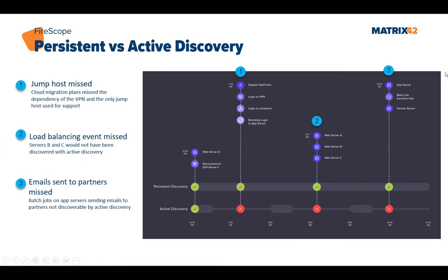Another example is web server load balancing. Web servers A and B run 24x7, but under high load, web server C is also booted up. With only active discovery, web server C will never appear in the CMDB as active because the scan only runs once a day. With persistent discovery, we always get information when web server C has been powered up and used.